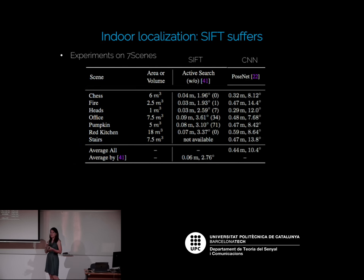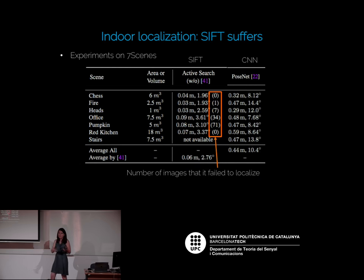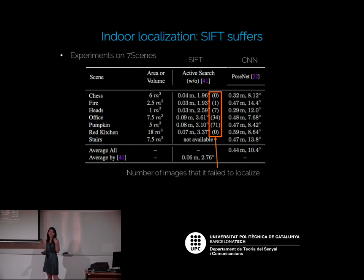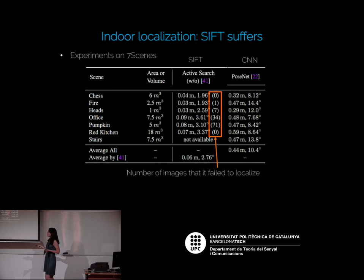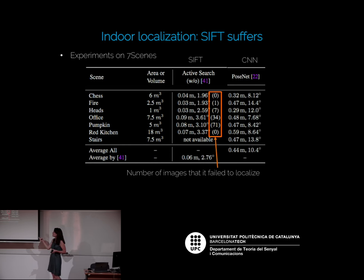Indoor and outdoor scenes are pretty different. Indoor scenes contain flat structures like walls with virtually no features. With classic feature-based methods, if there are no features to extract, the method cannot localize a large number of images — up to 50% of images in some datasets. SIFT-based methods suffer here, while deep learning achieves 0.44 meters versus 0.06 meters — still a large gap, but there's some potential for deep learning in indoor localization.